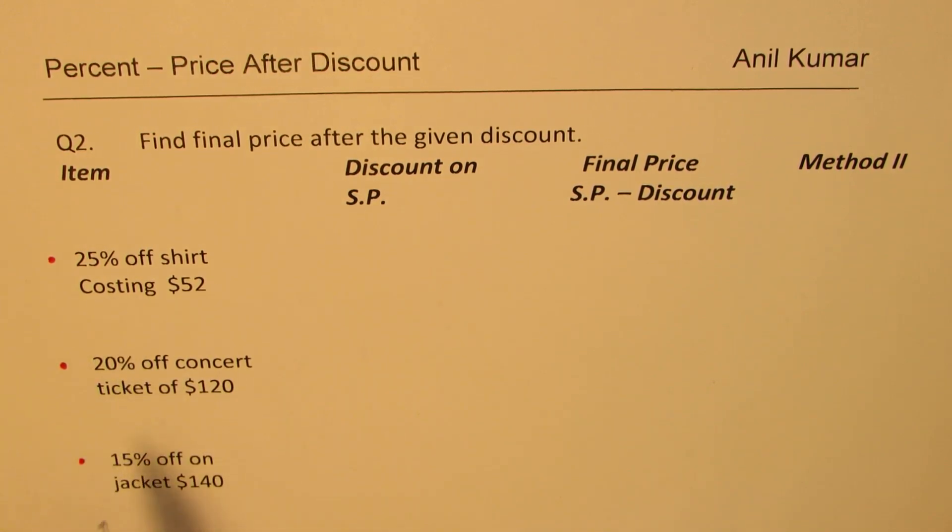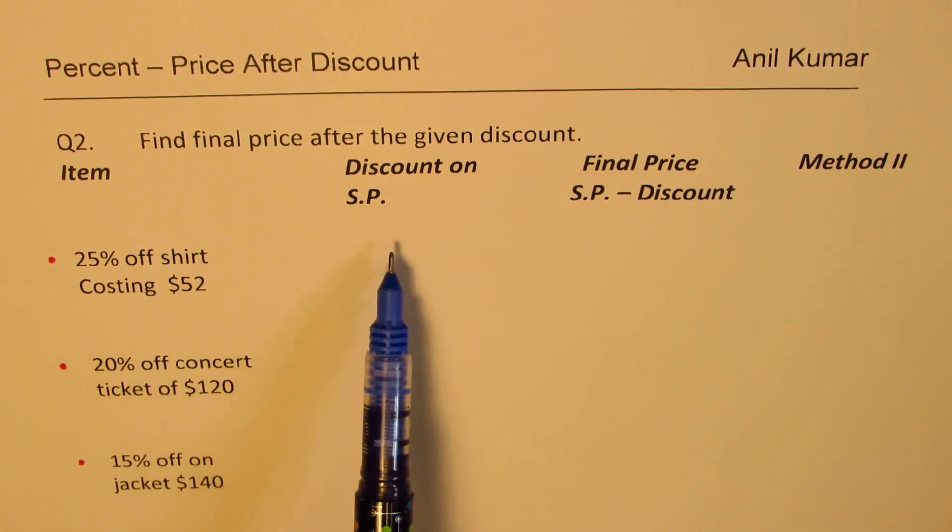Now, we are given three items here with percent discount on their selling price. Always this discount is given on selling price. And then once the discount has been deducted, we get the final price which you pay to buy the material.